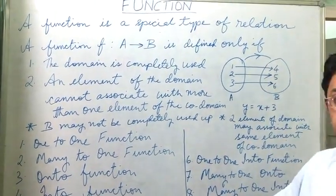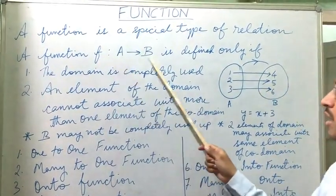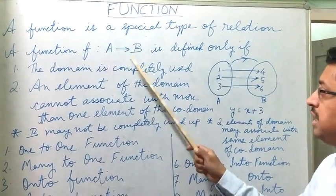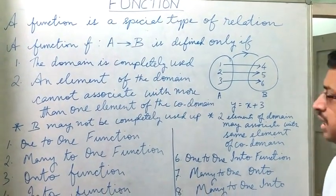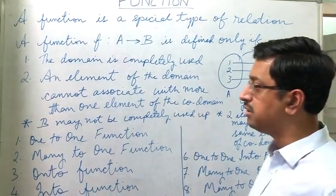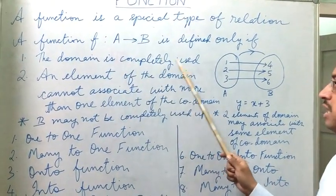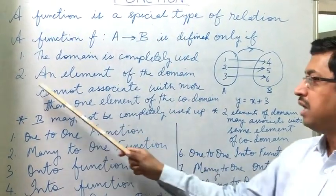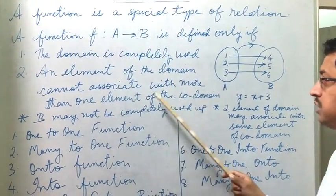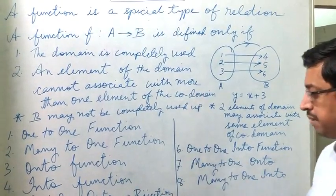The formal definition of a function is that a function f from A to B, where A is a non-empty set and B is also a non-empty set, is defined only if: first, the domain is completely used, and second, an element of the domain cannot associate with more than one element of the co-domain.